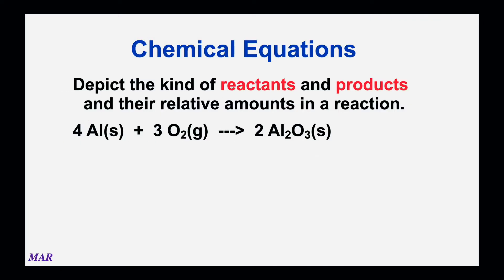Let's talk about a chemical equation. This is an example of a chemical equation: aluminum reacting with oxygen to make aluminum oxide. Because aluminum and oxygen are by themselves and neutral — no positive or negative charge — I would call those elemental forms. So that's elemental aluminum and elemental oxygen reacting to make aluminum oxide, Al2O3. We need to know the terms reactants and products, and how much of each to add to make a successful reaction.